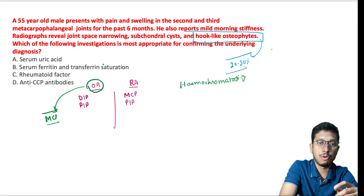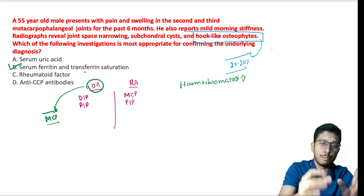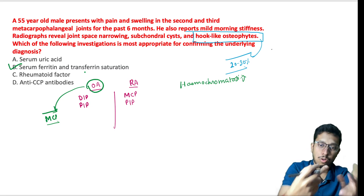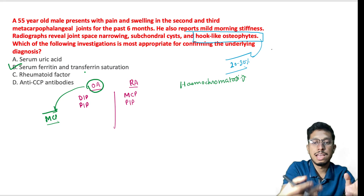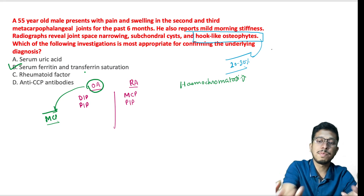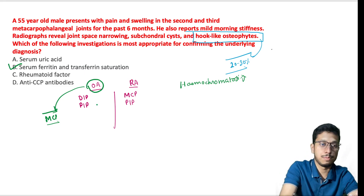So how do you evaluate this? Obviously with serum ferritin and transferrin saturation levels. Besides the second and third metacarpophalangeal joints, hemochromatosis arthropathy can also involve larger joints similar to primary osteoarthritis — such as the knees, ankle, shoulder, and hip.